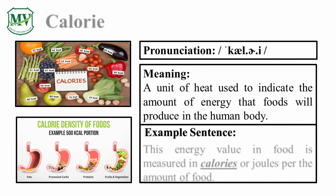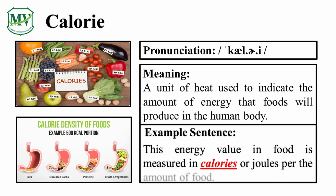Please repeat the word after me. Good job! Let's spell it. C-A-L-O-R-I-E — Calorie. Great! This energy value in food is measured in calories or joules per the amount of food. Can you try reading the sentence on your own? Great!